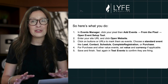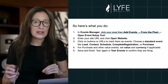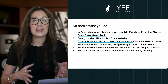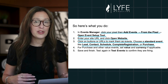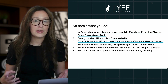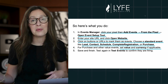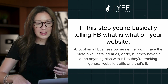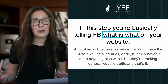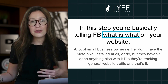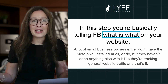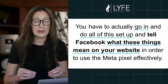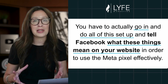Enter your site URL and click Open Website, then click on buttons or URLs within your site to mark them as events. Choose a standard event like Lead, Contact, Schedule, Complete Registration, or Purchase. And if you're in e-commerce, for purchase and other value events you can set value and currency if applicable, to tell it how much each sale is worth. Then save and finish, and test again in Test Events to confirm that they're firing. In this step, you're basically telling Facebook what is what on your website. A lot of small business owners either don't have the Meta Pixel installed at all, or they do but they haven't done anything else with it — so they're only tracking general website traffic. You have to go in and do all of this setup and tell Facebook what each thing means on your website, like a purchase or a lead form completion, in order for it to use the Meta Pixel effectively.